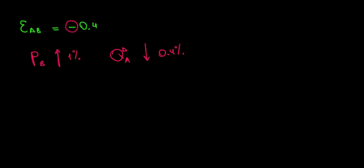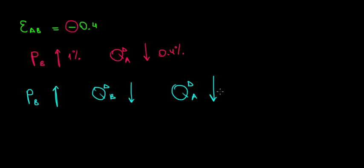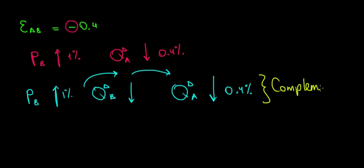Now why would the quantity of good A decrease? Let's see the chain of reactions. If the price of B goes up by 1%, then the quantity demanded of good B goes down, which leads to the quantity demanded of good A also going down — decreasing by 0.4%. This happens because we need both good A and good B. If we decrease the demand for one, we also decrease the demand for the other. These are called complements. Because the price of good B goes up, we can afford less of it, so we also have to buy less of A — there's no need to buy A if we can't complement it with product B.